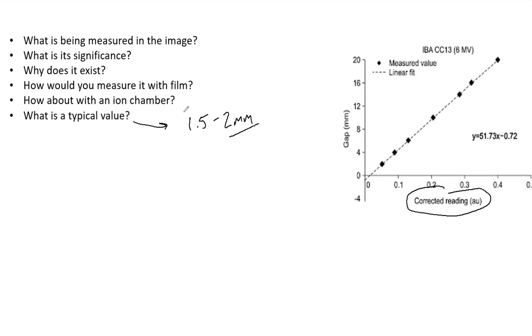This is for a Varian machine and it would be really good to know these values. That could be something definitely expected of you in your exam. Understand DLG, why it exists, its significance, how to measure it, and then a typical value. That should set you up for success. Thank you for watching. If you have any questions, please comment below. Happy studying.